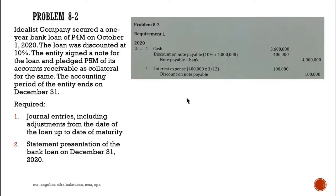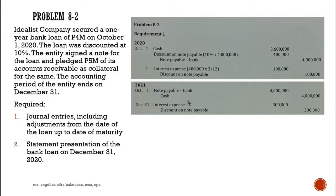In 2021, we pay off the loan since it is a one-year bank loan. The entry is: debit note payable — bank 4 million, credit cash 4 million. Then on the payment date, we close the remaining discount on note payable: debit interest expense, credit discount on note payable — 400,000 minus 100,000 equals 300,000.